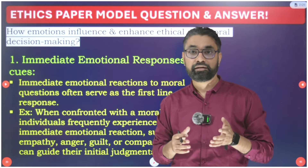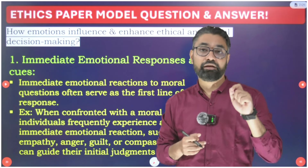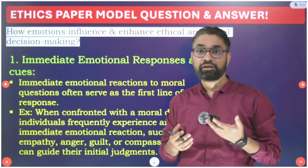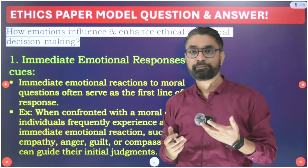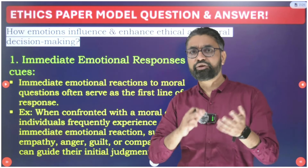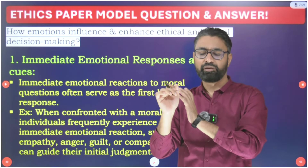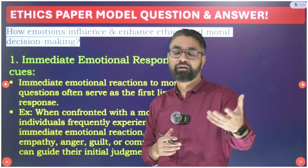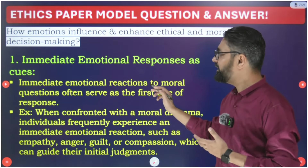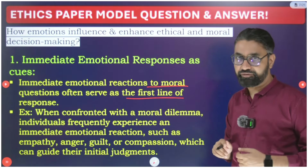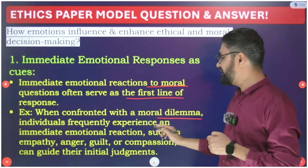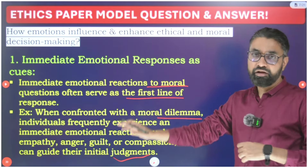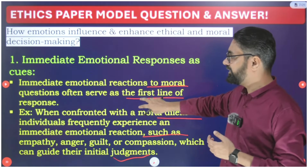Then, when we deliberate — should the criminal be punished this way or that way — we engage in more careful ethical decision making. Immediate emotional reactions to moral questions often serve as the first line of response. When confronted with a moral dilemma, individuals frequently experience an immediate emotional reaction such as empathy, anger, guilt, or compassion, which guides their initial judgment.